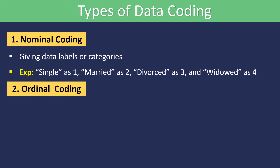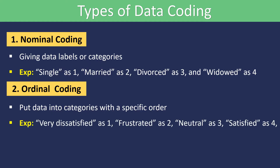Number two, ordinal coding. This is when we put data into categories with a specific order. Let's say we are asking people how satisfied they are. We might code very dissatisfied as one, frustrated as two, neutral as three, satisfied as four, and very satisfied as five.